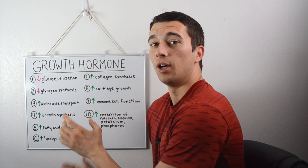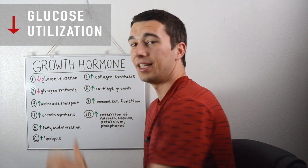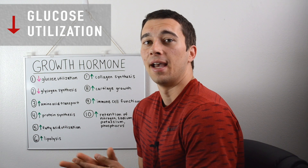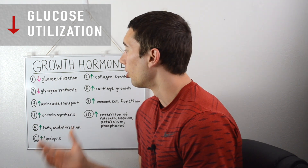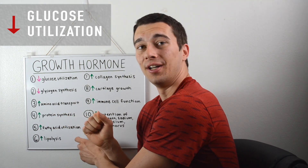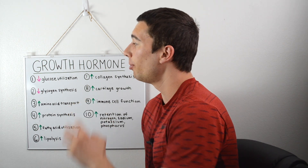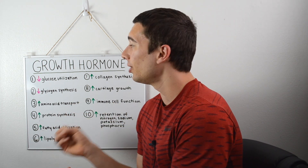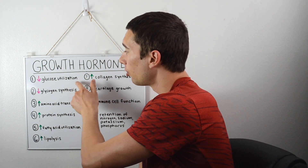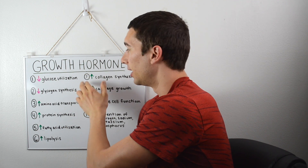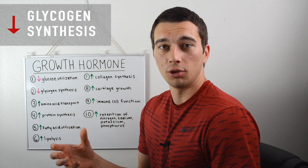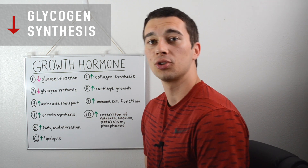The first thing we're gonna think about with growth hormone is that it's gonna decrease our utilization of glucose. Let's think about the example of you ate a meal and then you fall asleep and your growth hormone is increasing. We know growth hormone increases at night, so that's going to cause a mobilization of fat, and that mobilization of fat into the bloodstream is gonna decrease our reliance on glucose as a fuel source. So anytime growth hormone increases we don't have to use glucose quite as much. When we also think about that, we're gonna think about glycogen — glycogen is just a polymer of glucose, it's just the short-term storage of glucose in our muscles and our liver.